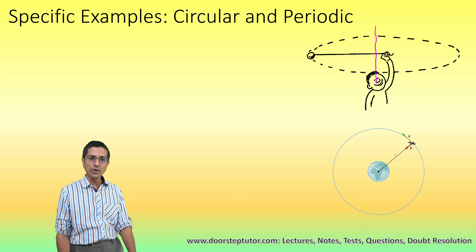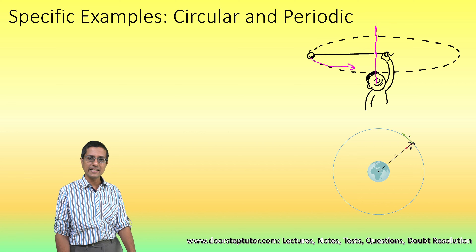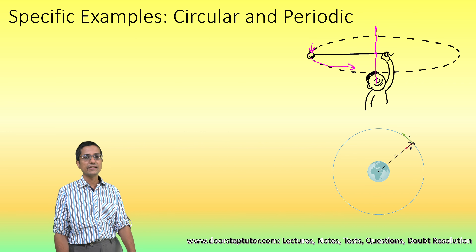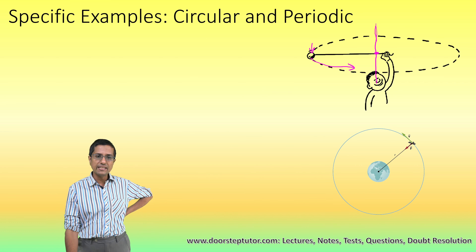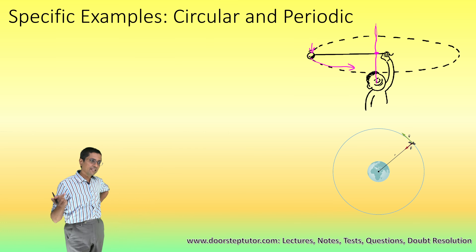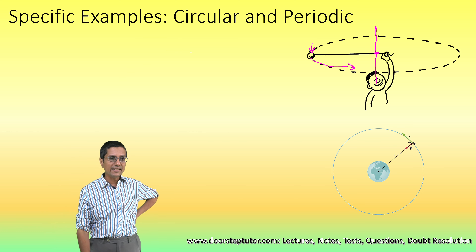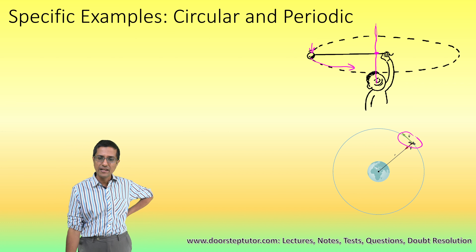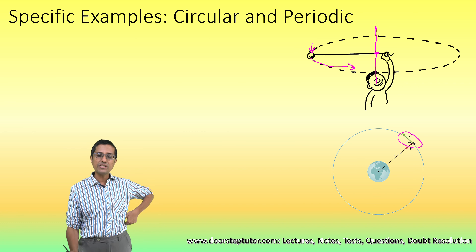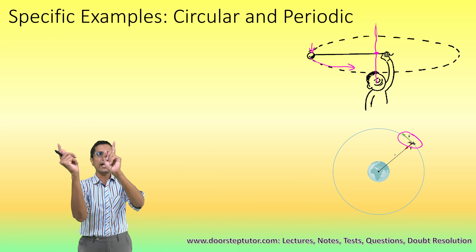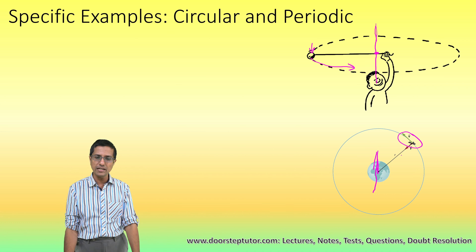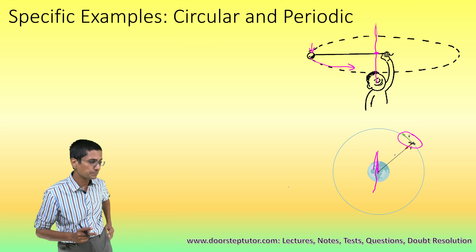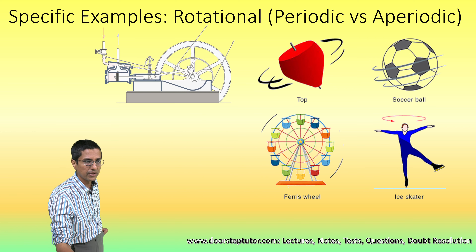The key thing to remember about circular motion is that the body goes round and round about an axis, and this axis lies outside the object. For example, the stone turning on a thread has its axis of rotation lying outside the stone, which is why we call it circular motion. Similarly, a satellite going around the Earth revolves around a line passing through the Earth — outside the satellite — so it exhibits circular motion.